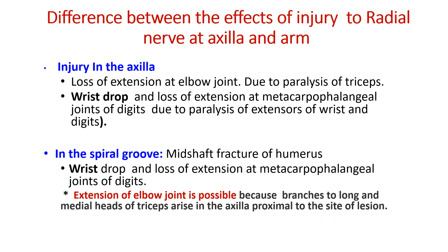If the injury to the radial nerve occurs in the axilla, then there will be loss of extension at the elbow joint due to paralysis of the triceps muscle, which is responsible for elbow extension. There will also be wrist drop and loss of extension at the metacarpophalangeal joints of the digits, due to paralysis of the extensors of the wrist and digits.